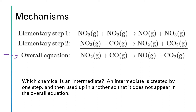What we're proposing here for the mechanism has two steps. The first step has two different NO2 molecules reacting with each other to give us one of the products. We're getting NO, but we're also getting NO3. So we're actually transferring that oxygen atom from one of the NO2s to another NO2. Then that NO3 molecule in the next step — elementary step number two — gives the oxygen atom to the CO, resulting in an NO2 and a CO2.